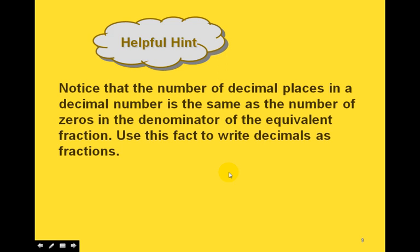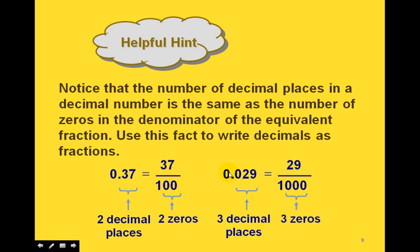We can use this to write decimals as fractions. For 0.37, since there are two decimal places, the denominator has a 1 with two zeros — that's 100 — so this is the same as 37 hundredths, or 37/100. For 0.029, there are three decimal places, so there are three zeros in the denominator, making it 29 thousandths, or 29/1000.